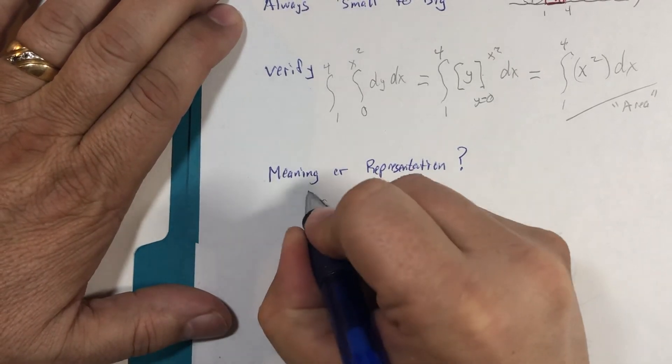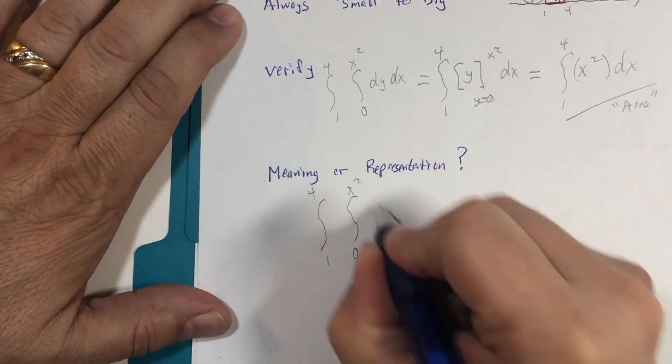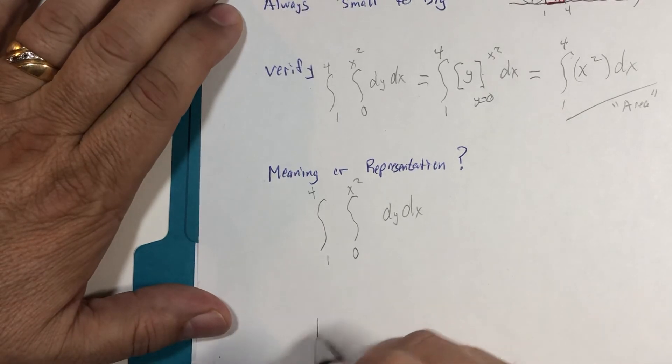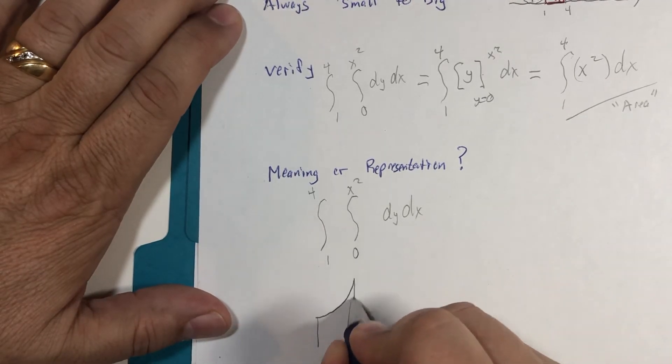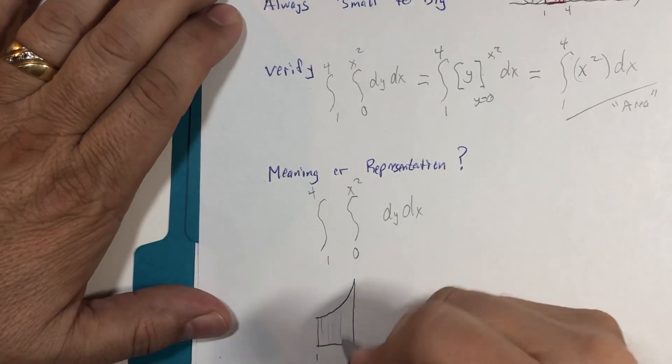So it turns out that this integral from one to four, from zero to x squared, dy dx, could literally be the area of this region, and I'm enhancing it to make it look more noticeable.